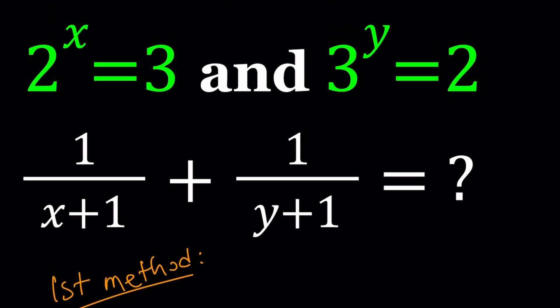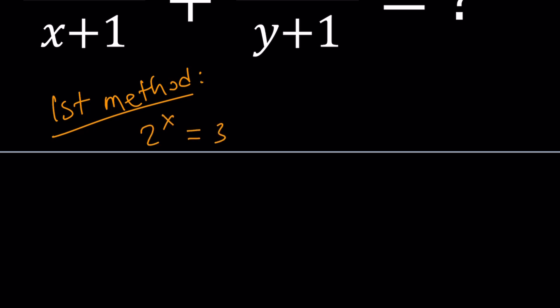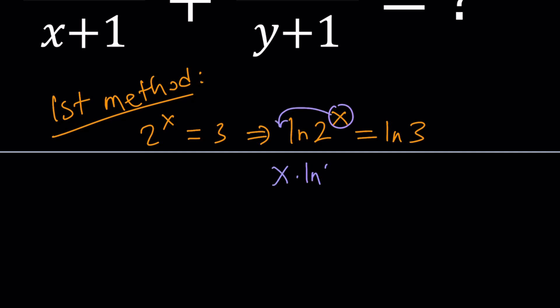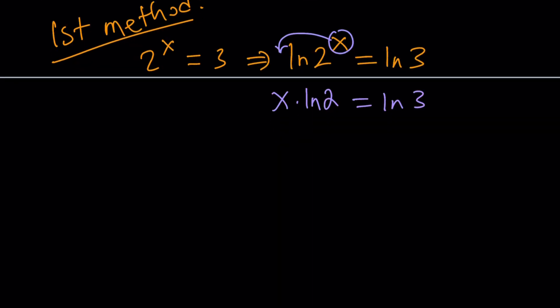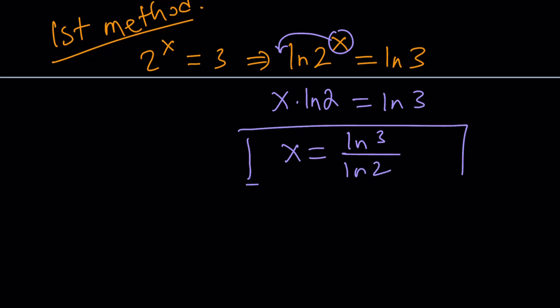So, I have 2 to the power x equals 3. I want to use natural log to turn this into an equation that I can plug in, because what I want to do is isolate x. So, ln both sides — ln is natural log, by the way — and then bring the x down. That gives us x times ln 2 equals ln 3, and then divide by ln 2. So that's the value of x in terms of natural logs.